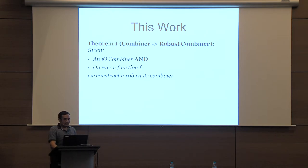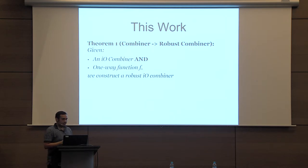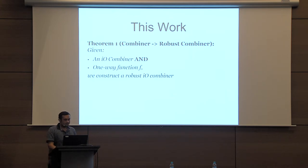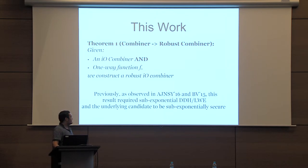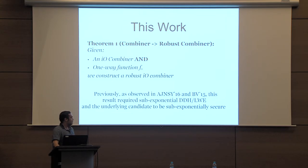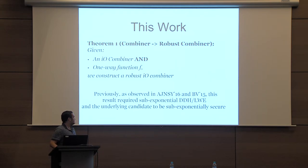Our first result states that any combiner can be converted to a robust combiner. More formally, if you have a combiner that works with only correct candidates, then using a one-way function F we can convert it to a robust combiner, and this transformation suffers only polynomial loss. A similar result was observed implicitly in Bitansky and Vaikuntanathan's work on approximate IO, but that required sub-exponentially hard DDH or LWE and sub-exponential security of the underlying candidate, whereas here we achieve it from one-way functions with polynomial loss.